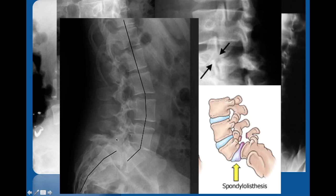For anterolisthesis, here we have anterolisthesis of L5 in relationship to S1. This line should connect with the sacral line, and there are various measurements involving the sacrum in relationship to L5. We can appreciate the spondylolisthesis at this level. That concludes this section; the next section will cover CT and MRI.